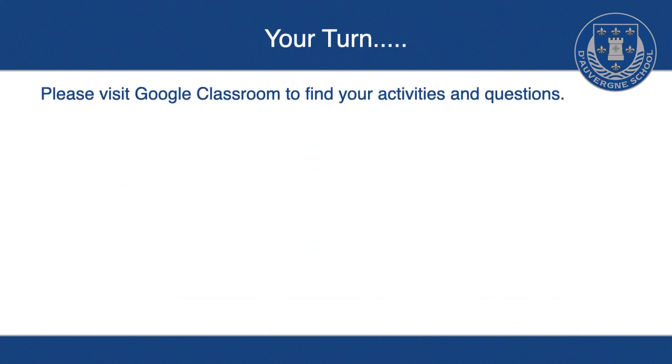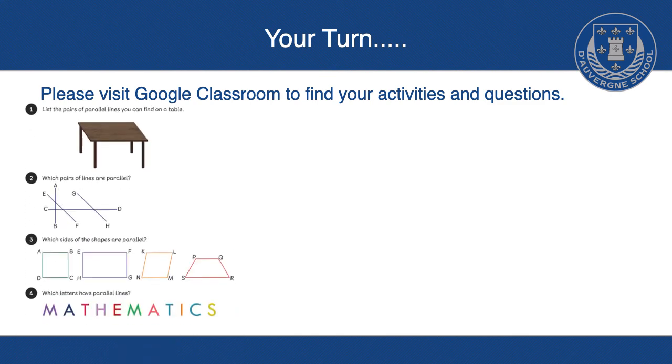So now it's your turn and I want you to go on to Google Classroom, have a little look at the activities. You'll see something like this. So it says list the pairs of parallel lines you can find. So, again, you need to use your letters so you can be the one that labels the parallel lines to begin with. And then you can write your findings.